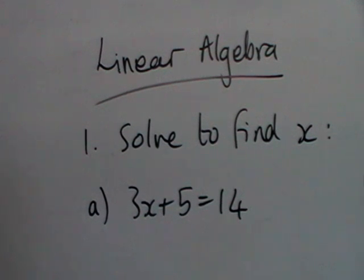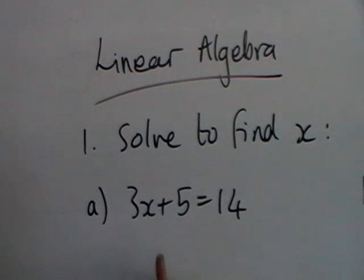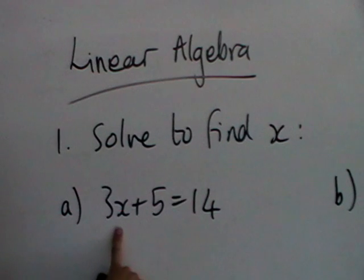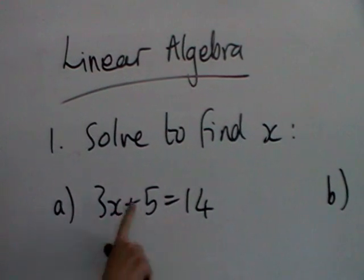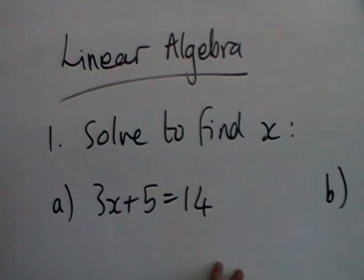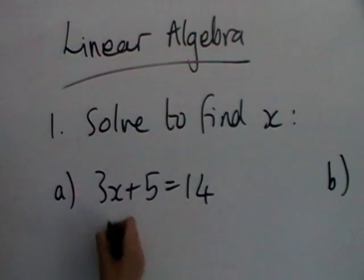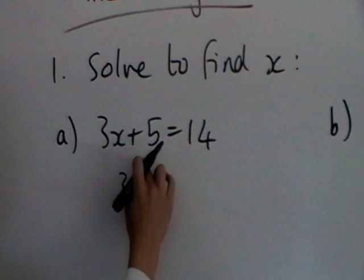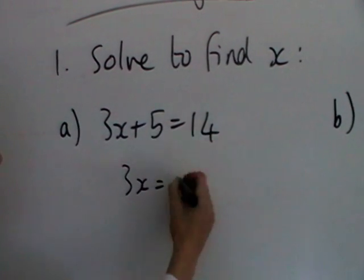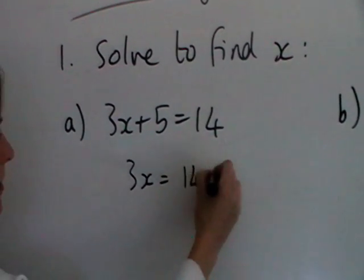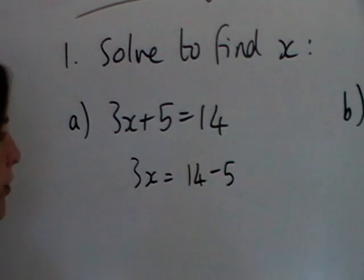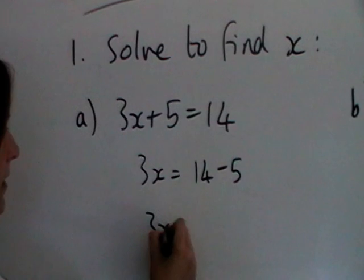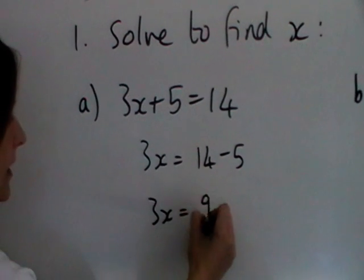To begin with, we're just solving to find the value of x. We want to get the x on its own and all the numbers on the other side. So we leave the 3x where it is and then we take the 5 over, and that will subtract on the other side. So we've got 3x is 9.